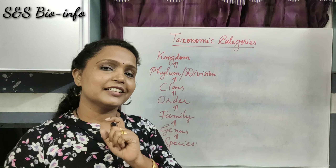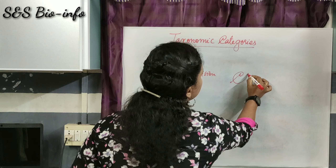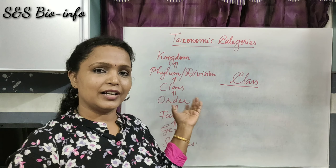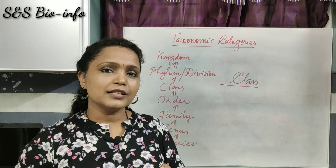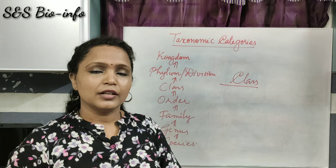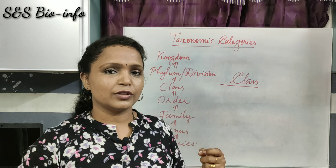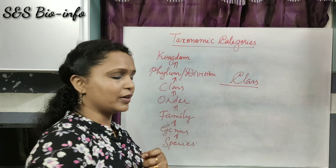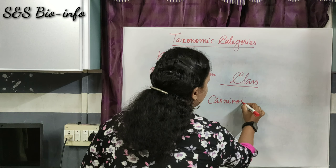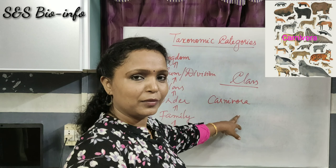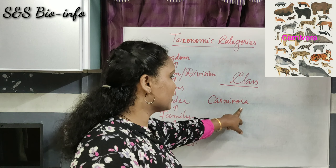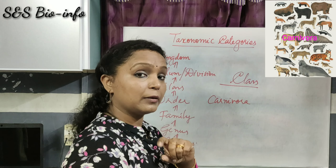The next higher category is Class. Class comprises closely related orders. For example, the order Carnivora — comprising carnivorous animals — is one such order.